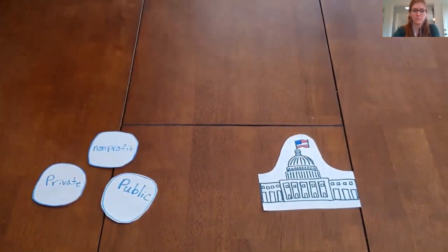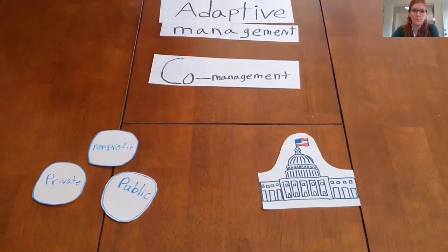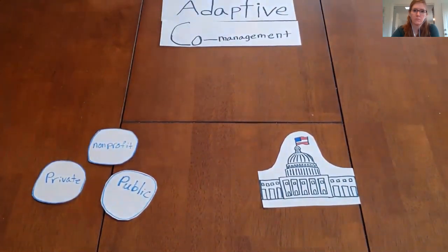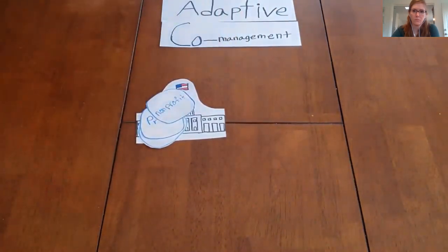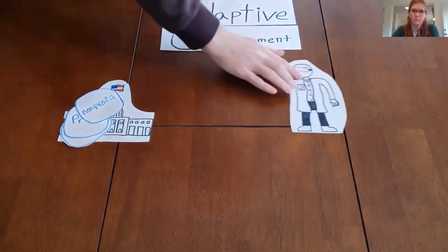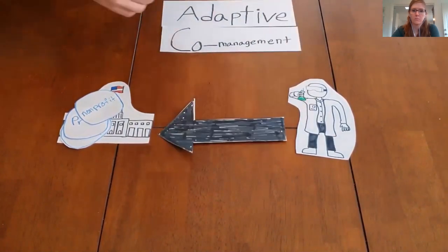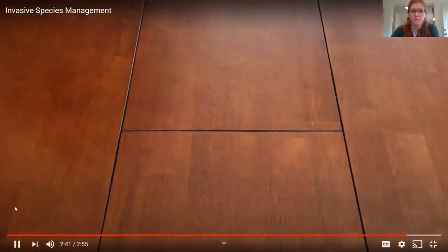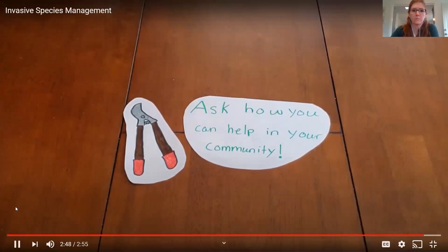Invasive species management is a complex issue. There are two types of management strategies: adaptive management, which is learning by doing, and co-management, which is social and institutional learning. By linking these two together, you get adaptive co-management, which creates connections between public, private, and non-profit sectors and between levels of government. Coordinated management between governmental agencies and the community is needed to deal with invasive species. There is a gap between research and management — connecting scientists to landowners, managers, and policy makers can help deal with invasive plants. If you want to be a part of invasive species management where you live, ask your local government about programs to remove invasive species and help native species return.